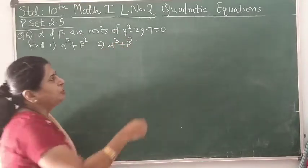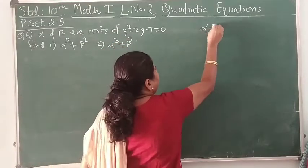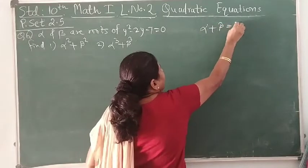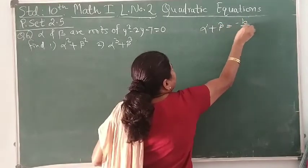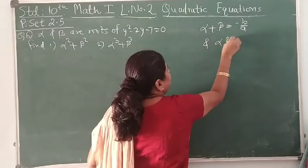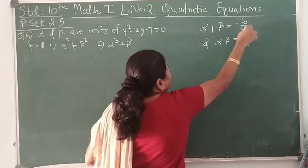From the given equation, we know that we can find α + β as -b/a, and α × β as c/a.